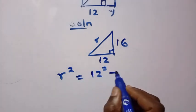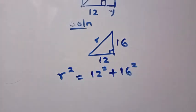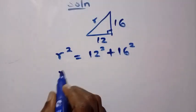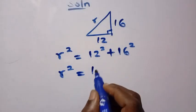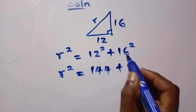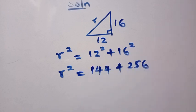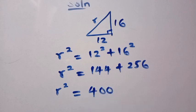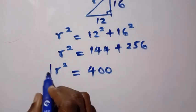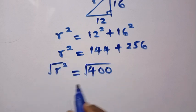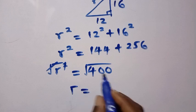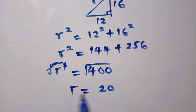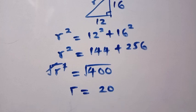By the Pythagorean theorem, r squared equals 12 squared plus 16 squared. That is r squared equals 144 plus 256, which gives us r squared equals 400. Considering only the positive part and taking the square root of both sides, the square root and square cancel, giving us r equals 20.